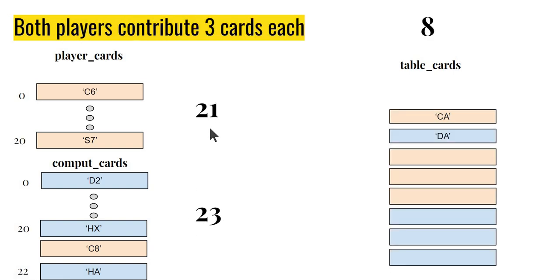They contribute 3 cards each. Player is left with 21, computer is left with 23. Table cards have become 8 because there were 2 to start with, and 3 from each have been contributed.